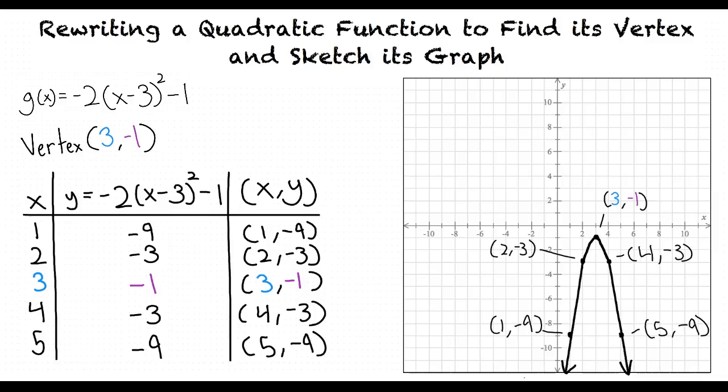Then we'll make a table showing the vertex and four more points, two on the left side of the vertex, and two on the right. Then we can graph our function. That sounds great. It seems like you understand how to rewrite a quadratic function to find its vertex and sketch its graph.